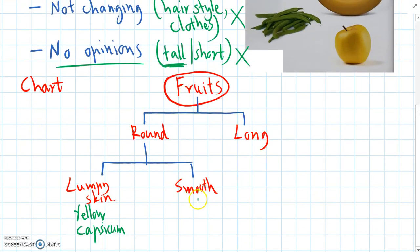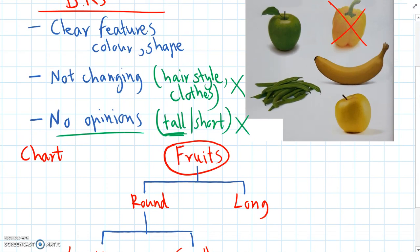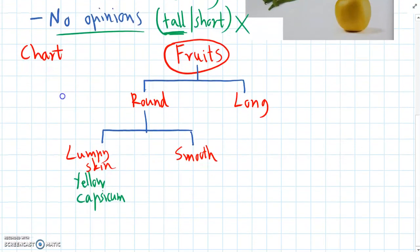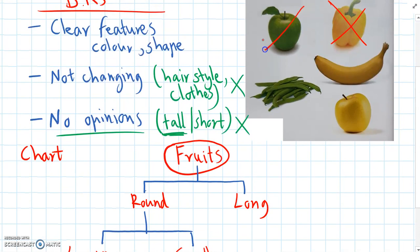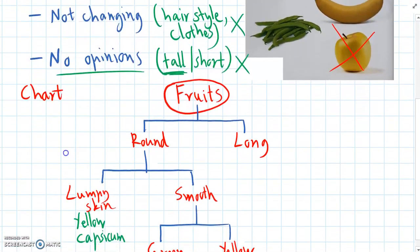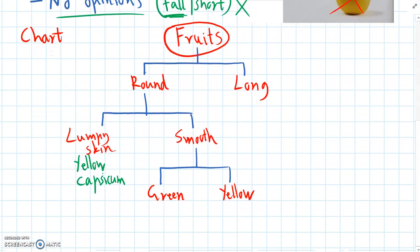So now, if we go across to the smooth group, we still have the green apple and the yellow apple. So I think color will be the best way to separate these two objects. So the question we're asking now is, is it green or is it yellow? And now we've classified the two apples. And we can write those down at the bottom of their branches of the dichotomous key. We have the green apple and the yellow apple.